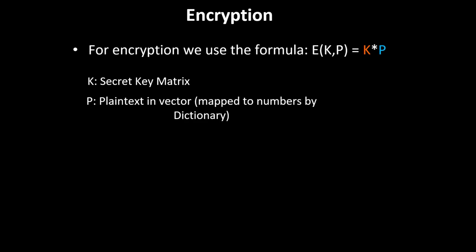So how does the Hill Cipher work? For encryption, we use the formula E(K,P) = K*P. We just do a matrix multiplication, which is K times P. K is our secret key matrix used for encryption and decryption. P is the plaintext vector, the text mapped to numbers.